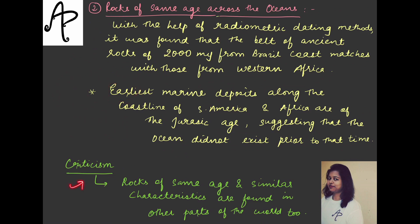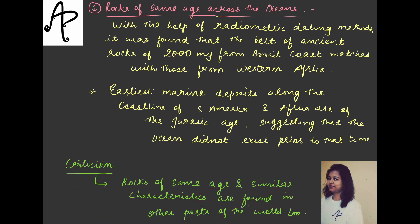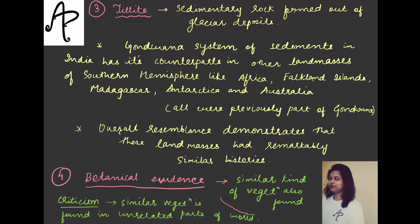The criticism of this particular point is that rocks of the same age and similar characteristics are found in other parts of the world too — not just in the Africa and America case. This has been raised as a criticism to this evidence.